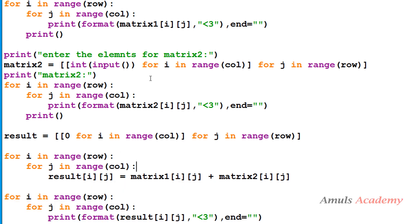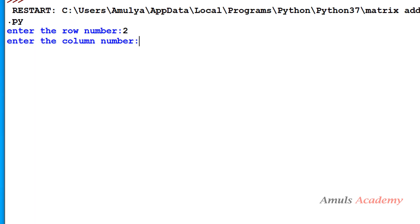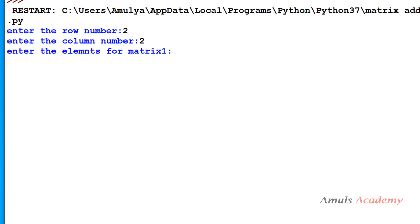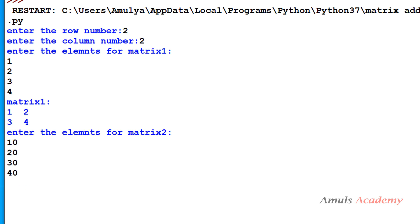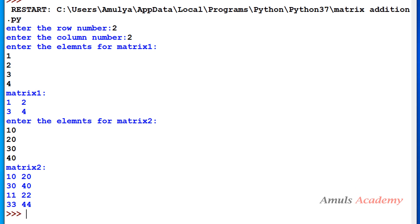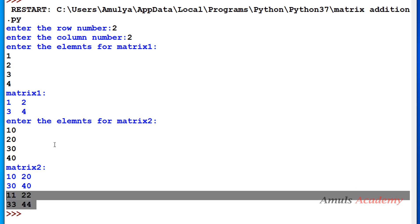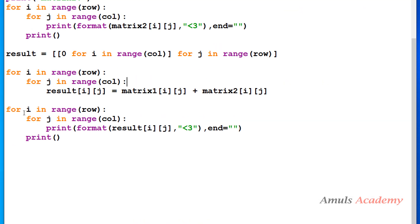Now we'll execute the program. I'll enter row 2, column 2, values 1, 2, 3, 4 for matrix 1 and 10, 20, 30, 40 for matrix 2. The result will be 11, 22, 33, 44. We'll also include a print statement to label the result.